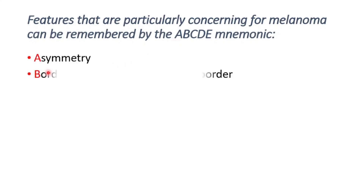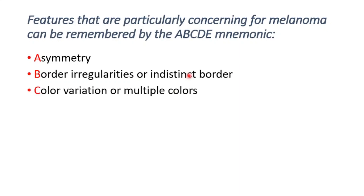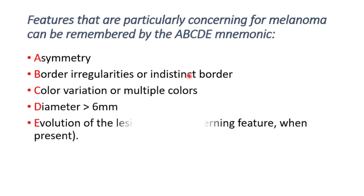A for asymmetry; B for border irregularities or indistinct border; C for color variation or multiple colors; D for diameter more than 6 mm; E for evolution of the lesion, which is the most concerning feature when present.